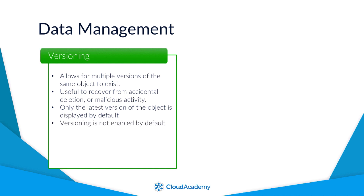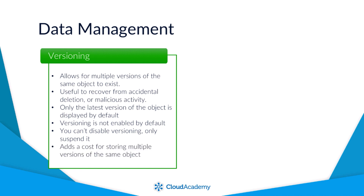Versioning is not enabled by default, and once you have enabled it, you need to be aware of two main points. Firstly, you can't disable versioning — you can suspend it on the bucket, which will prevent any further versions being created, but you can't disable it altogether. Secondly, versioning will be an added cost to you as you are storing multiple versions of the same object, and the Amazon S3 cost model is based on actual usage of data.